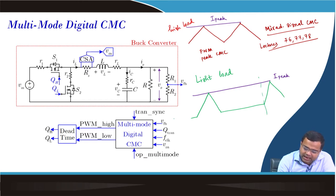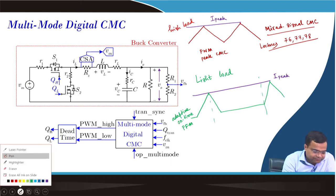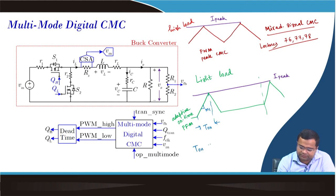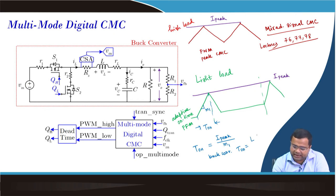This is called adaptive on-time PFM, where the on-time is getting generated. What is the on-time if this is the slope? T1 is equal to I_peak divided by M1. And for a buck converter, T1 is equal to L times I_peak.